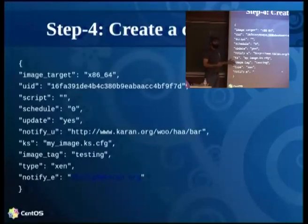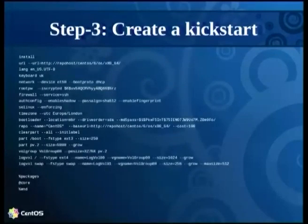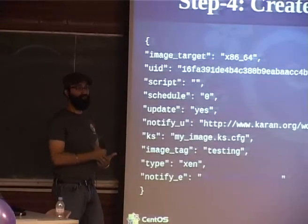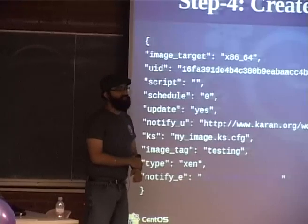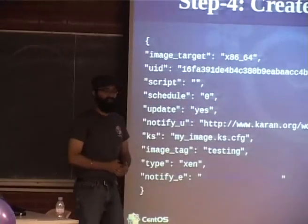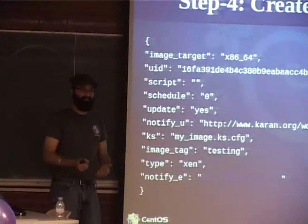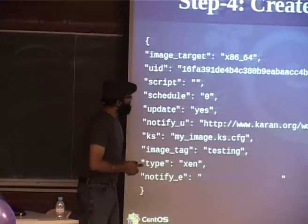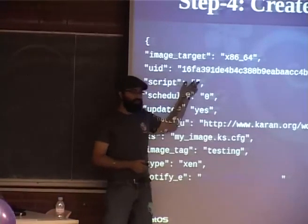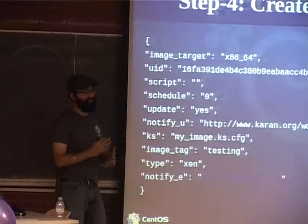You also need to create a config file that tells Raindrops what to do with that kickstart file. You have an image target specifying the architecture to build on. You can actually control the host environment to build the image into — for example, you could request a MIPS build run on an x86-64 host environment. You also have a UID, which gets injected automatically if you don't specify one, so we recommend leaving it out.